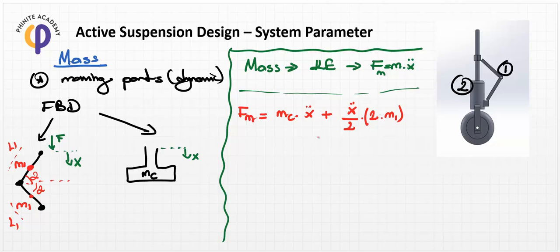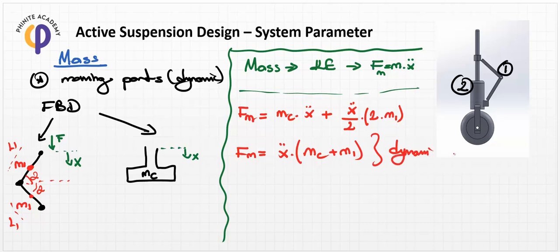In the final form, this can be written as Ẍ times (MC + M1), which gives us the dynamic mass part of this system.